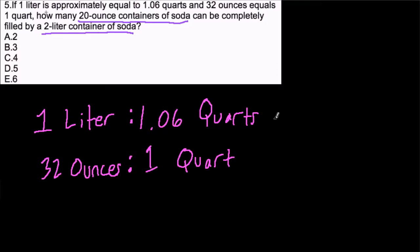1 liter is 1.06 quarts. So what's 2 liters? Well, 2 liters is double of 1 liter, right? So 2 liters is the same as 2.12 quarts. All I'm doing here is doubling these parts, and I get this new ratio.